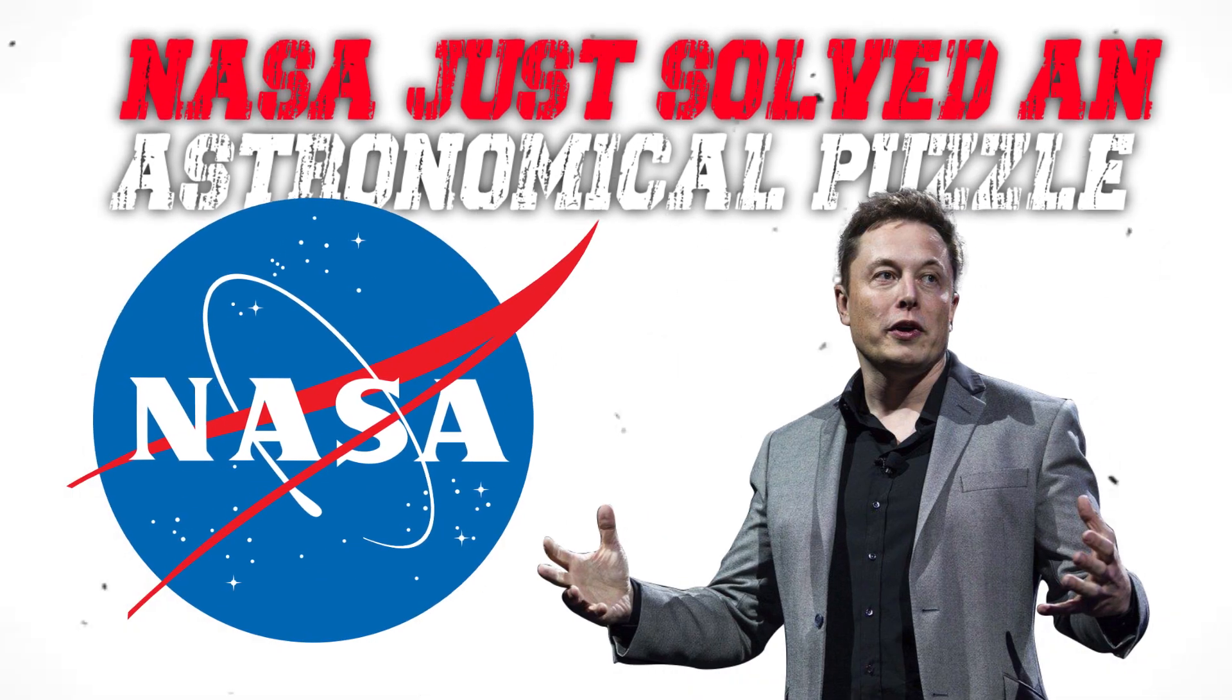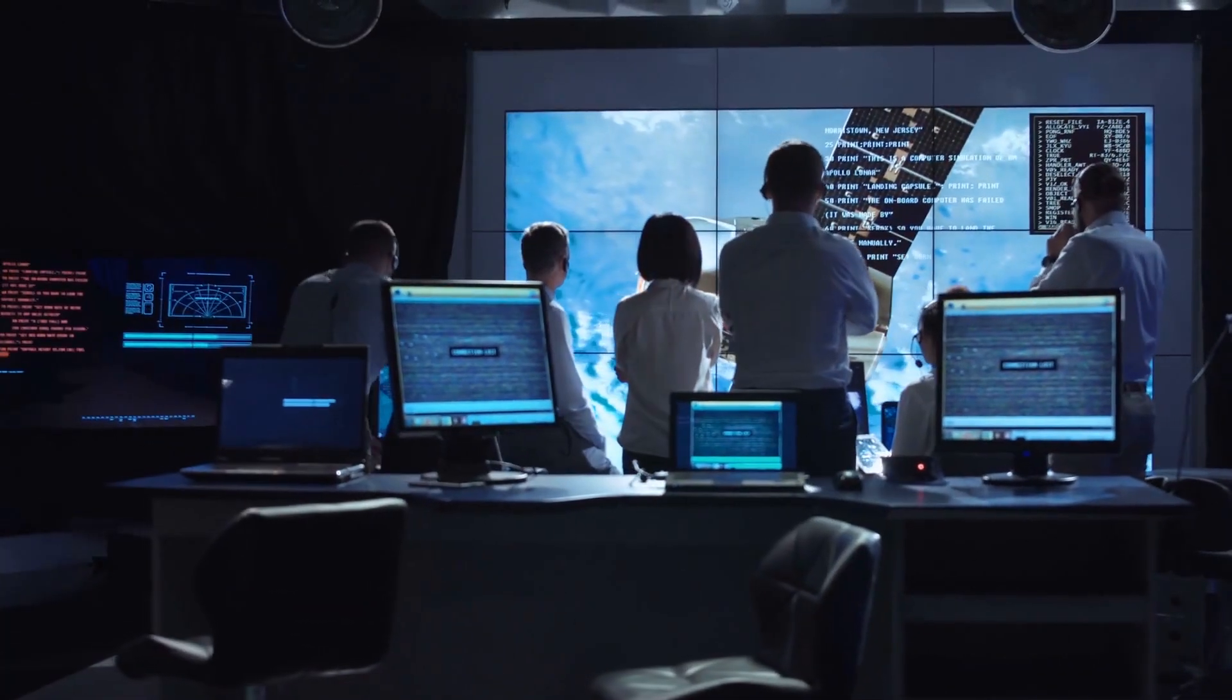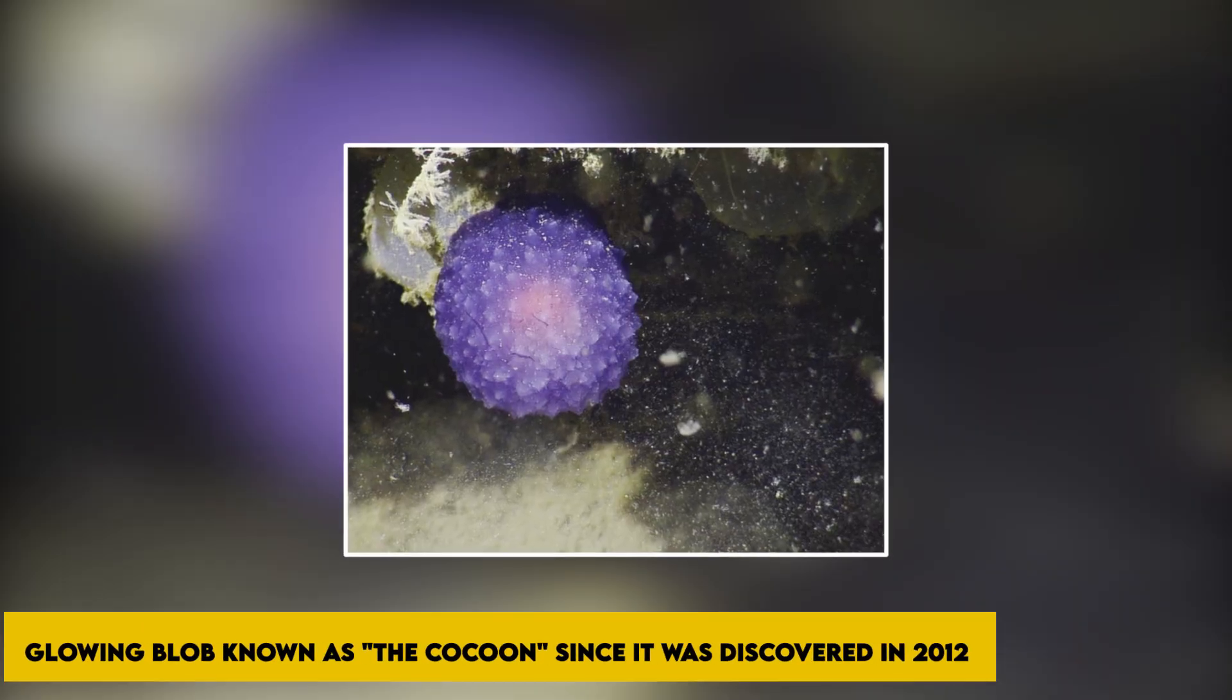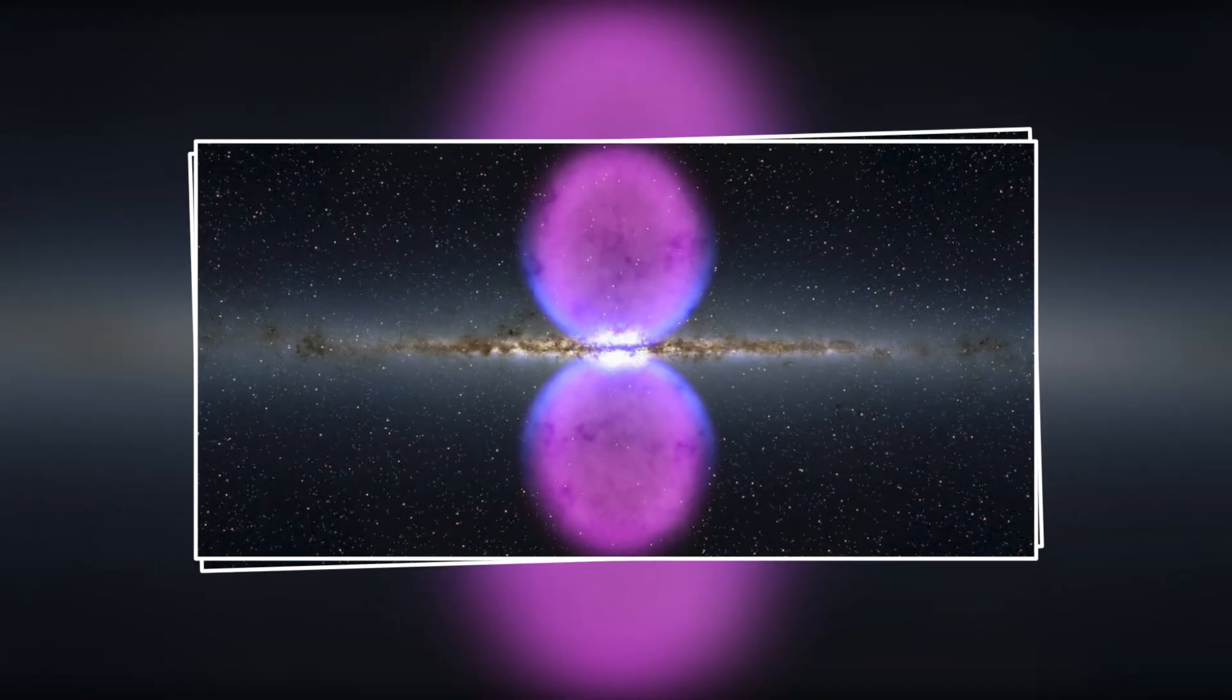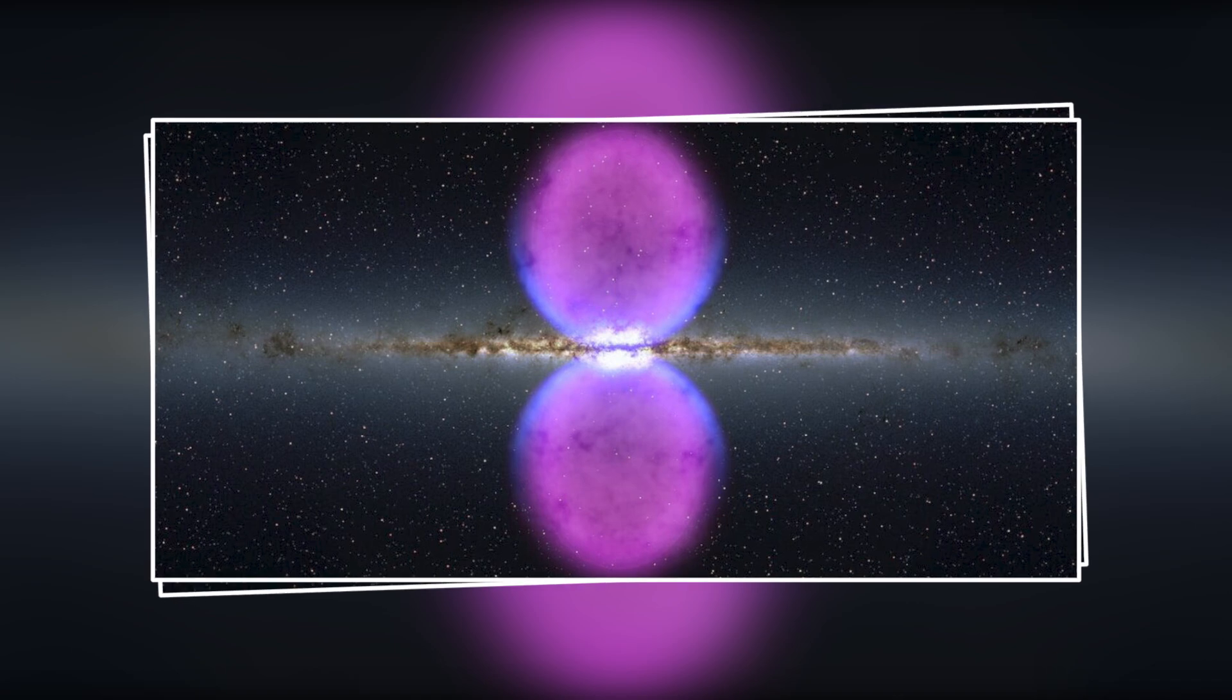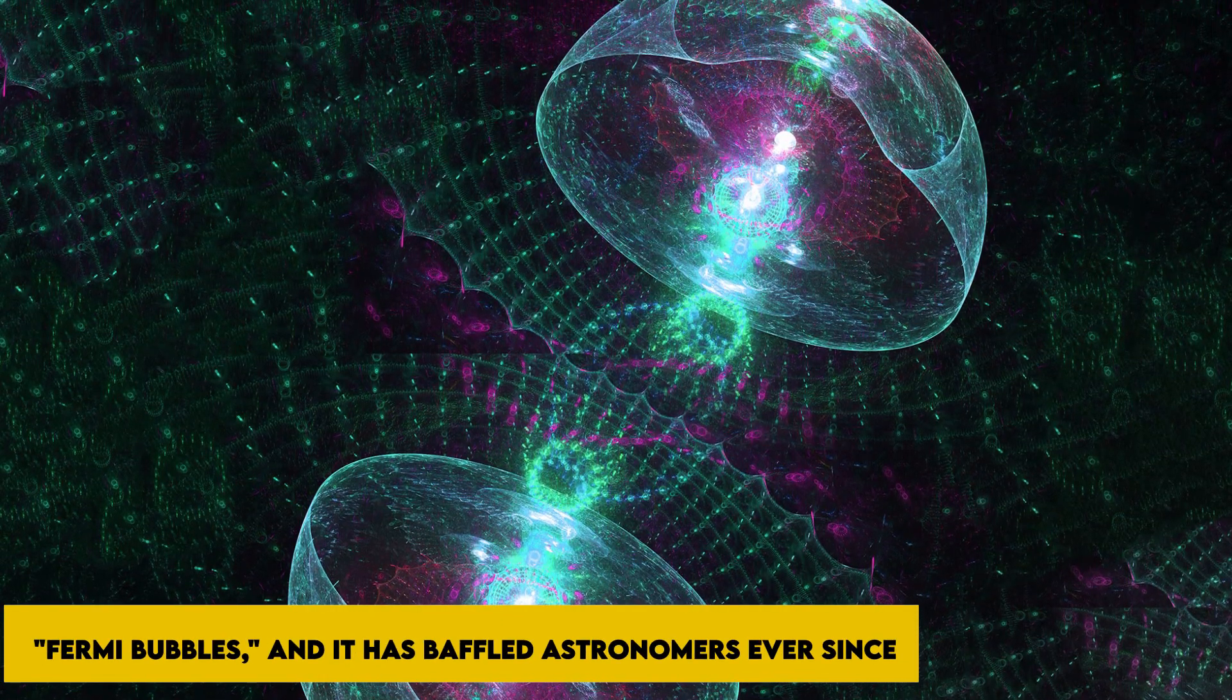NASA Just Solved An Astronomical Puzzle That Shocked Elon Musk. Researchers have been perplexed by a glowing blob known as the cocoon since it was discovered in 2012. It appears to be inside one of the massive gamma ray emanations from the center of our galaxy known as the Fermi bubbles, and it has baffled astronomers ever since.